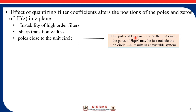If the poles of the original transfer function are close to the unit circle, then the poles of the quantized system function may lie just outside the unit circle. So, when the poles are outside the unit circle, the system will be unstable.